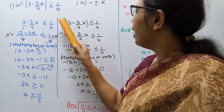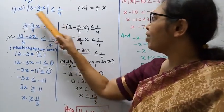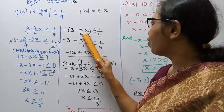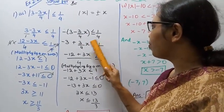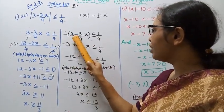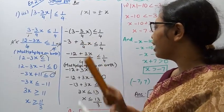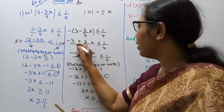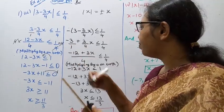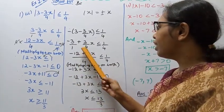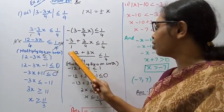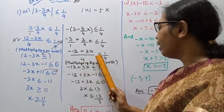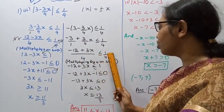Second case: minus of bracket (3 minus 3/4 x) less than or equal to 1/4. Expanding: minus 3 plus 3/4 x less than or equal to 1/4. Taking LCM again — 4 into minus 3 gives minus 12, and 1 into 3x gives plus 3x divided by 4, less than or equal to 1/4.